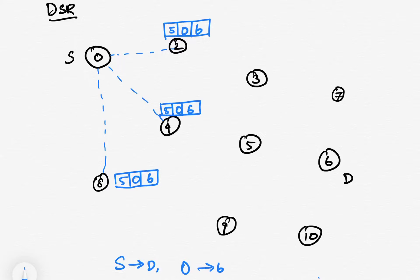Once node number 2 receives, it will check who is the destination (6) and what is the source node (0). This packet is called RREQ, or route request.